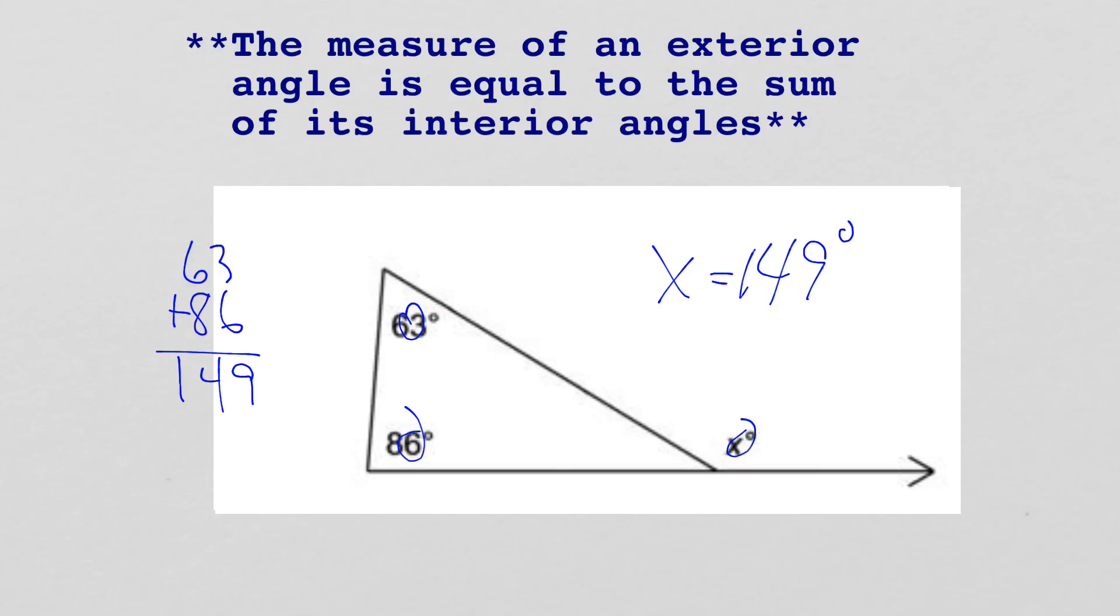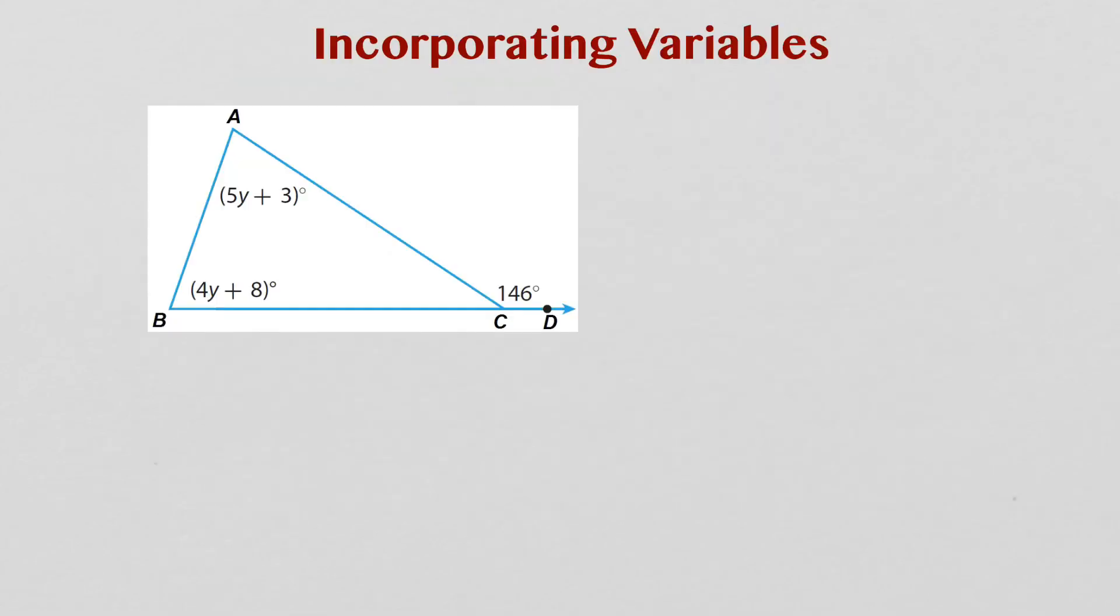As always, we can make it a little bit more difficult by incorporating some variables. You have another example right here. But again, we're just going to base it off of the same exact premise, the idea that the two remote interior angles, that's here and here, they have to equal the exterior. So I'm going to take basically those two angles. So angle plus angle. And I'm going to say it has to equal that 146. That's the exterior.